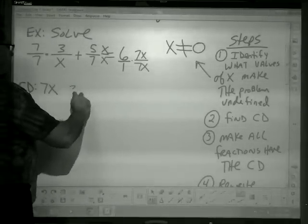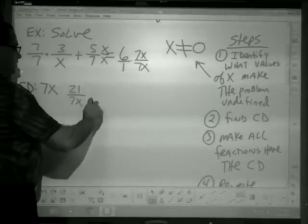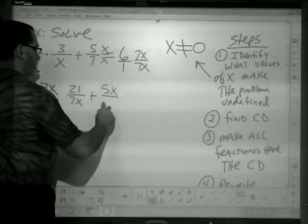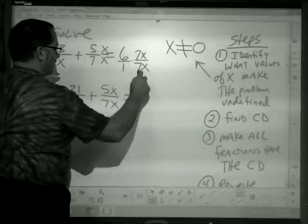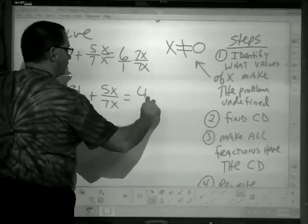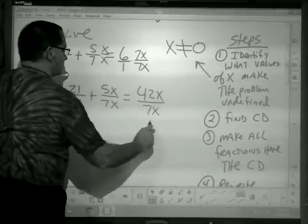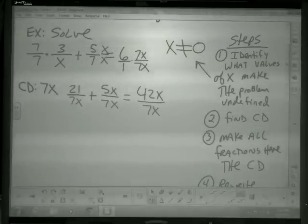So we've still got to clean this up a little bit. So 7 times 3, 21, over 7x, plus 5x over 7x, equals 7 times 6, 42, x over 7x. So all the fractions right now have the same denominator.